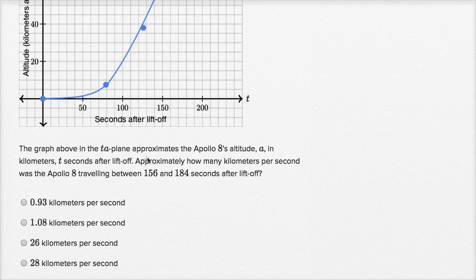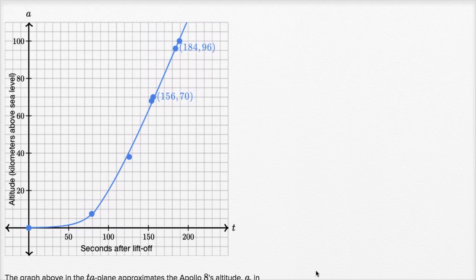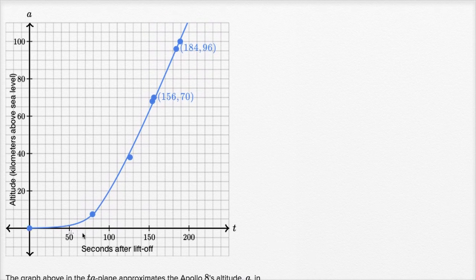The graph above in the TA plane approximates the Apollo 8's altitude A in kilometers, T seconds after liftoff. They're calling it the TA plane because our horizontal axis is the T axis, measuring time, and our vertical axis is the A axis, measuring altitude in kilometers. This is time in seconds; this is altitude in kilometers.